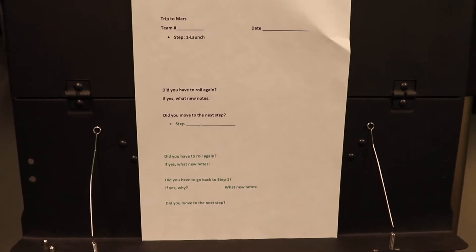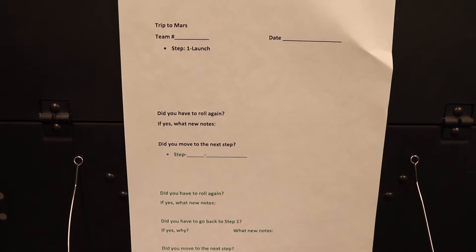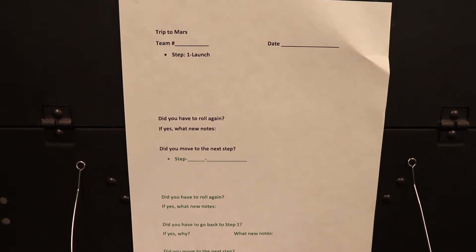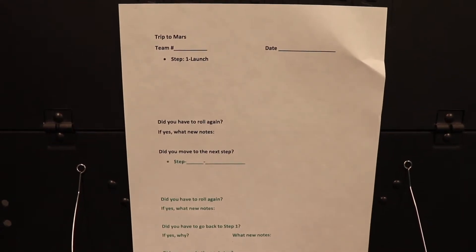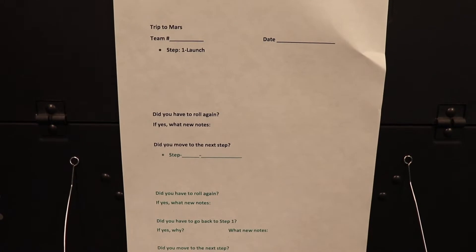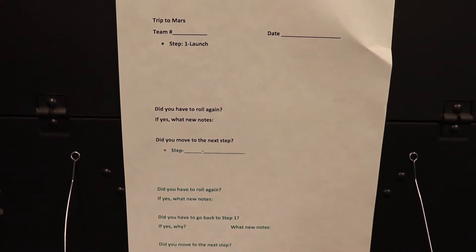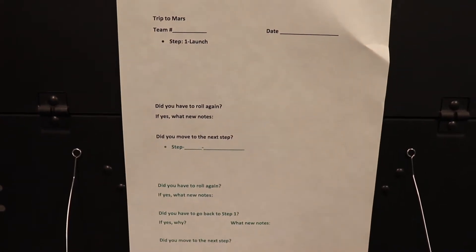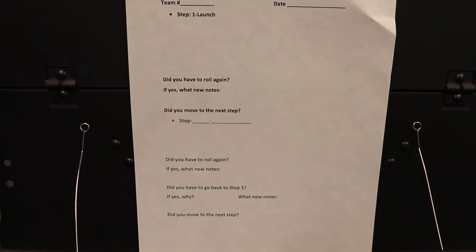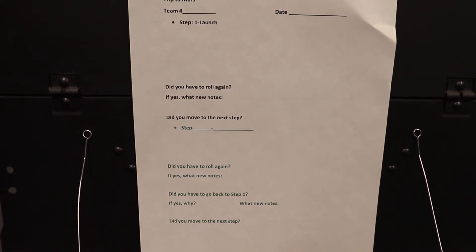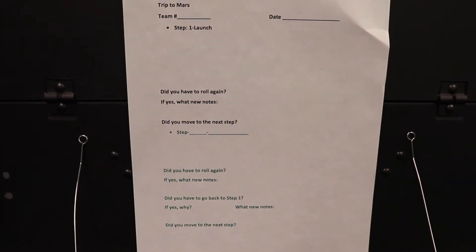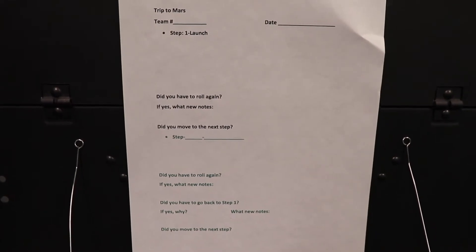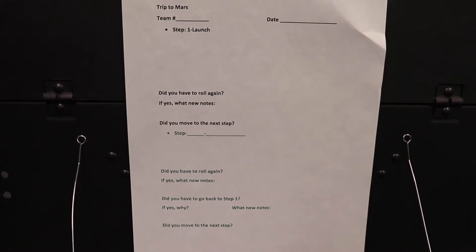Divide the sheet and in your top half, write step one, launch. Skip a little bit of space and write: Did you have to roll again? If yes, what new notes? Skip a little more space. Did you move to the next step? Then — I changed the color of my ink just to stay organized, but you don't have to — write step blank-dash-blank, because we don't know what step that'll be yet until we begin.